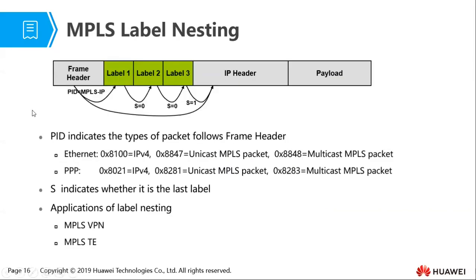Lastly, we have the TTL — Time To Live — field, an 8-bit value used similarly to the TTL in an IP header, to avoid endless looping of MPLS packets within the MPLS domain. In the frame header, the type field shows the next protocol. For Ethernet or PPP carrying an MPLS packet, specific hexadecimal values represent that. For unicast and multicast MPLS packets, different hex values are used.